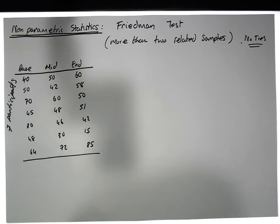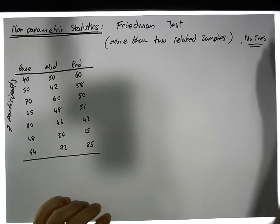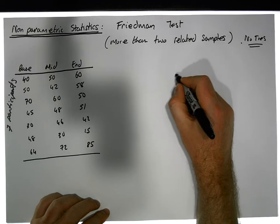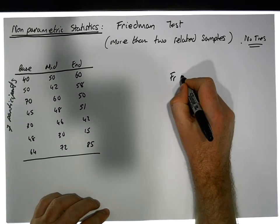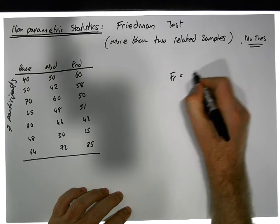So the test statistic, just to pull the test statistic out of the air—this Friedman test statistic FR looks very complicated, but it's actually straightforward enough. It's equal to 12